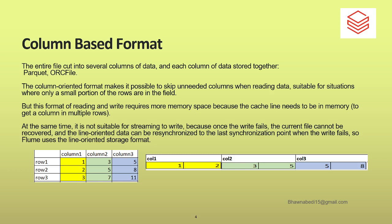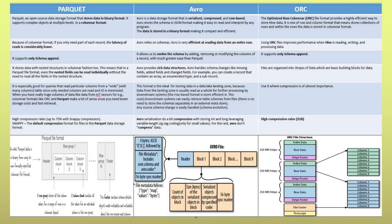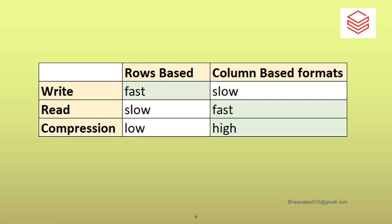Now let's check this comparison slide on Parquet, Avro, and ORC. Parquet and ORC are both column-based formats. Avro is the row-based format. You can pause this video and go through the slide in detail. Regarding writes: writes to row-based formats are very fast because it directly dumps data into the row format with no processing and no memory overhead. Column-based formats have memory overhead because they divide the data into chunks and process it column by column.